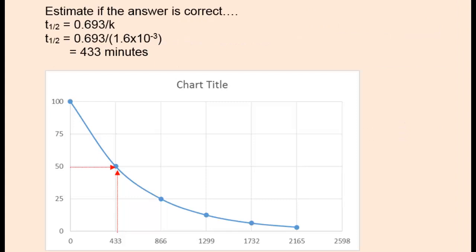We could estimate if the answer calculated is correct. This is a useful thing to do to verify that your setup, rearrangement, and plugging and chugging into your calculator in fact worked out correct. What we'll do is calculate the half-life for the reaction. We could do that easily because the half-life for a first-order reaction is 0.693 divided by the rate constant. So the half-life for this reaction is 433 minutes.